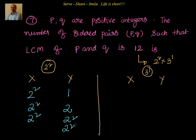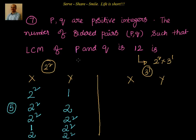So distributing 2² across X and Y gives a total of 5 ordered pair combinations: (2²,1), (2²,2), (2²,2²), (1,2²), (2,2²). Five combinations come from considering 2² alone.